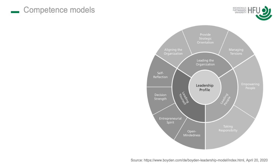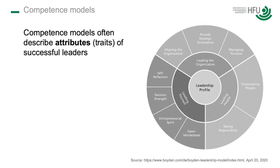If you do a picture search on Google, you find a lot of models that are like circles. In these circles or wheels, you very often find competencies that pretty much sound similar. For instance, I found one from an executive consulting firm and they propose things like: provide strategic orientation, empowering people, entrepreneurial spirit, decision strength, self-reflection, aligning the organization. The idea is that if you demonstrate all these attributes, you probably are a successful leader. So we talk about traits, more or less.